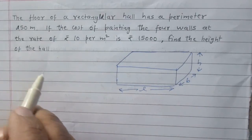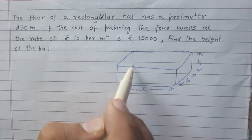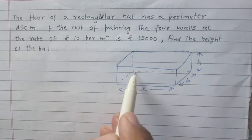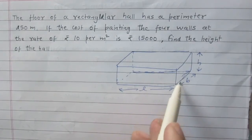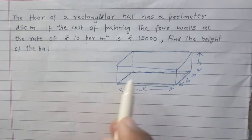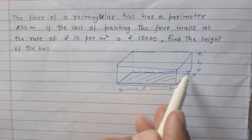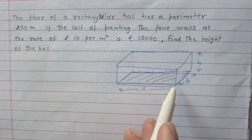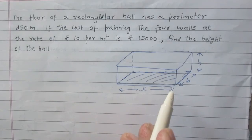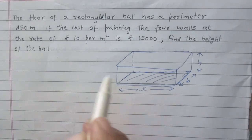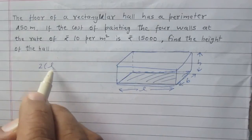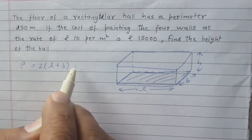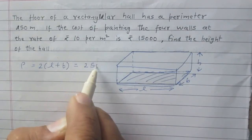We are given that the perimeter of the floor of this hall is 250 meters. This area is the floor — the floor of the rectangular hall. The floor is in the shape of a rectangle, so the perimeter of the rectangle is twice the sum of length and breadth, and we are given that it is 250 meters.